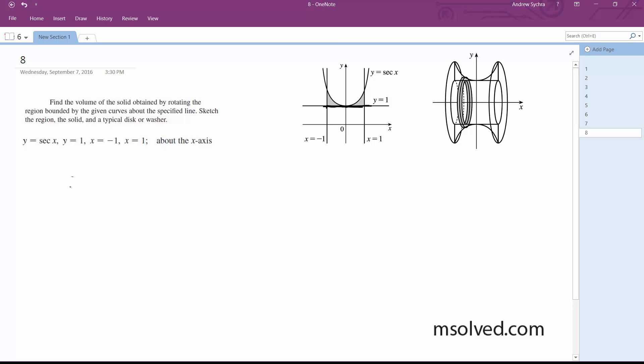So this equation is going to be simply from negative 1 to 1, that's from x equals negative 1 to 1, because we're using washers here that are cut away. And we're going to use pi times the secant squared x minus 1 dx.